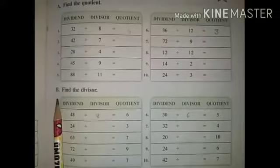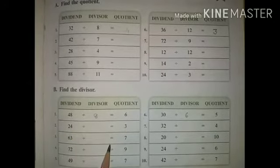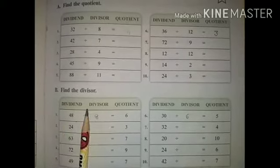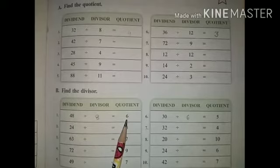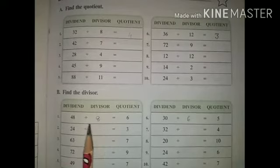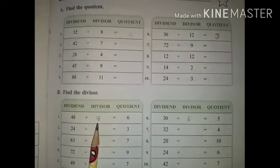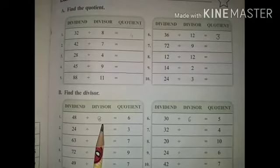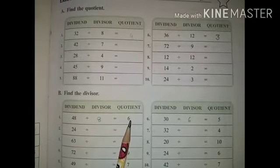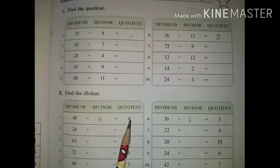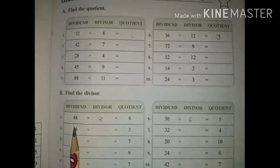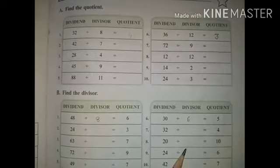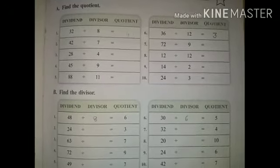Next question: find the divisor. First question — dividend 48, quotient is 6. So 48 divided by what equals 6? Answer: 8. You can check: 6 multiply 8 equals 48. Same as it is, find all the divisors.